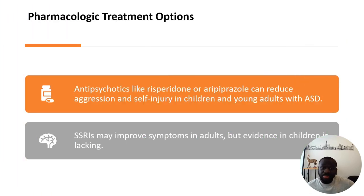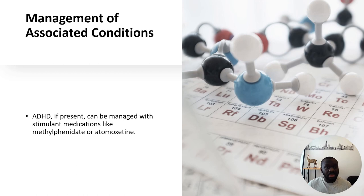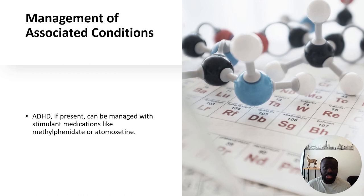Antipsychotics like risperidone and aripiprazole can reduce aggression and self-injury in children and young persons with autism spectrum disorder. Antidepressants — typically the SSRIs, selective serotonin reuptake inhibitors — may improve symptoms in adults, though evidence in children is more limited. For associated ADHD, stimulant medications like methylphenidate and atomoxetine can be used in the management of attention deficit hyperactivity disorder.